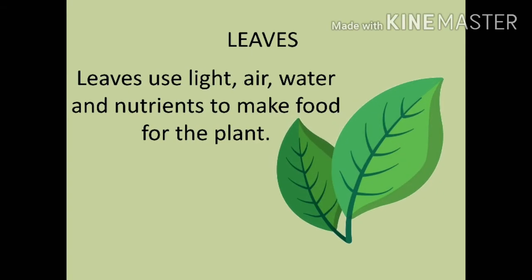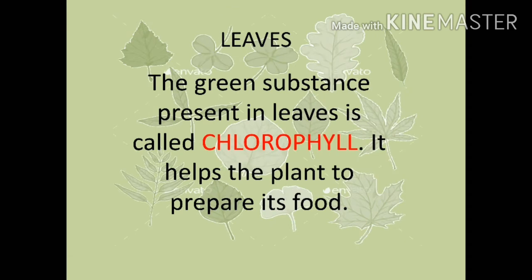Leaves use light, air, water and nutrients to make food for the plant. The green substance present in leaves is called chlorophyll. It helps the plant to prepare its food.